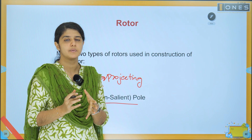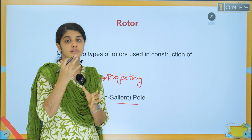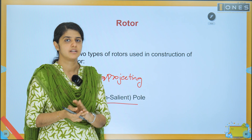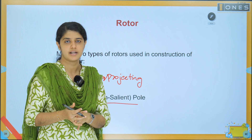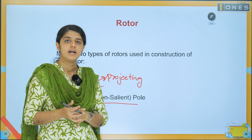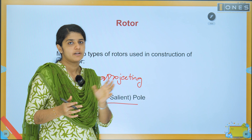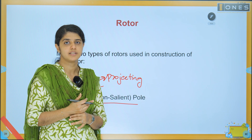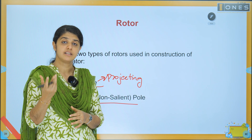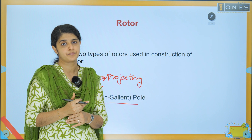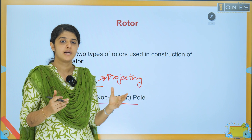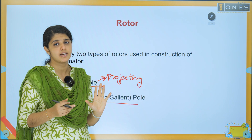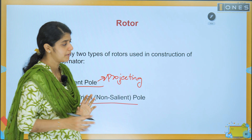The stator has three-phase armature windings — R, Y, B phases — connected in delta or star. The rotor consists of DC-excited poles, which are either salient or non-salient.